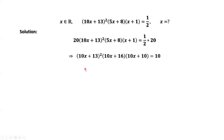Look at the three numbers now: 10x + 13, 10x + 16, and 10x + 10. What is the relationship between these three numbers? The second number is the first number plus 3. The last number is the first number minus 3.